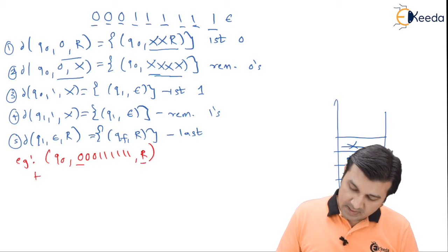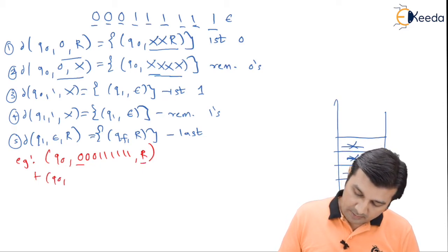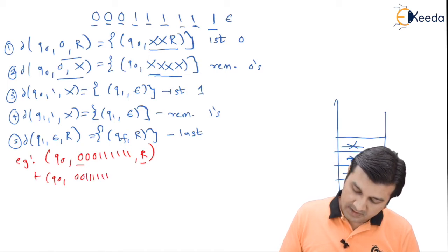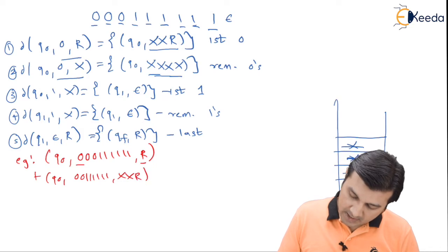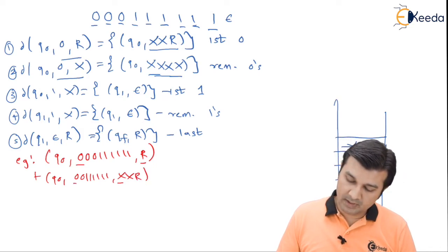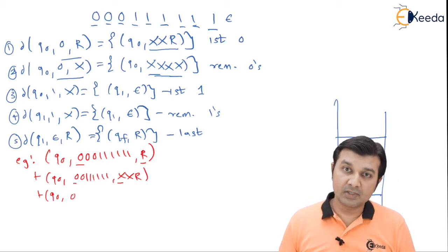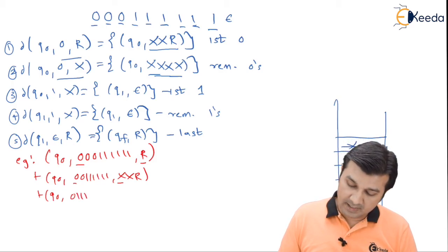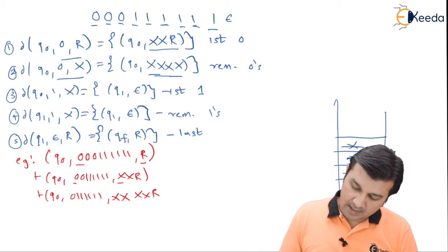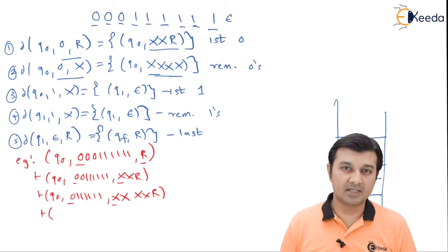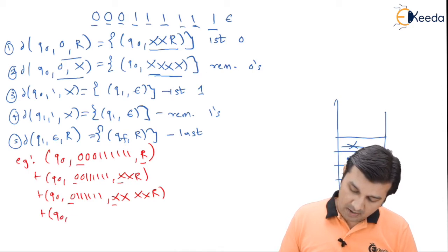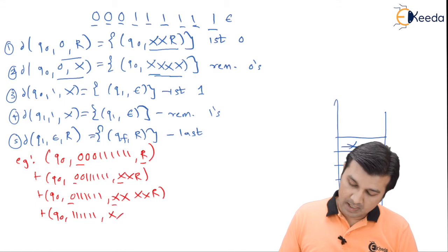q0 on receiving a 0 when the stack top is R, as per rule 1, remain in q0. What I have is two zeros, six ones, followed by xxR. Then q0 on 0 when the stack top is x, using rule 2, I say remain in q0. I have single 0 followed by six ones on the input, followed by xxR and double x pushed above it.